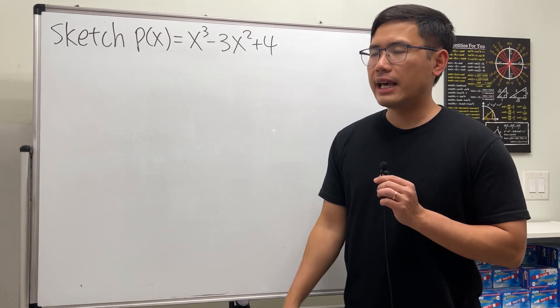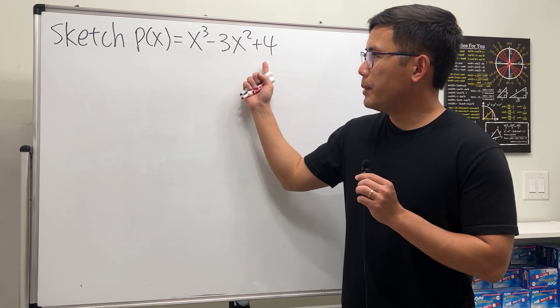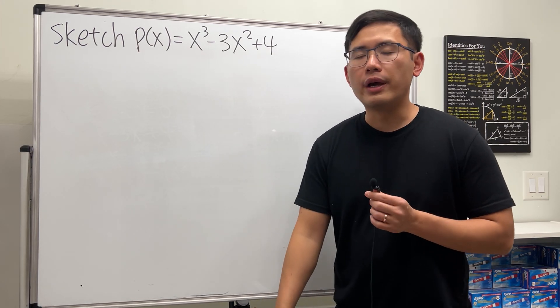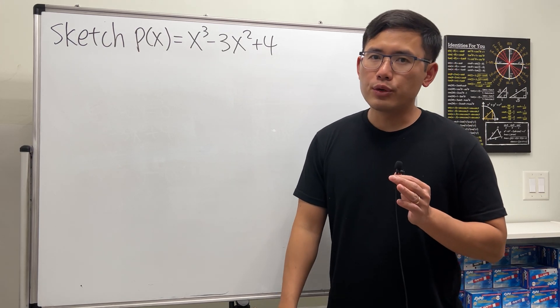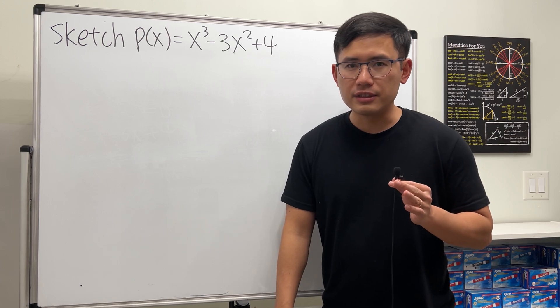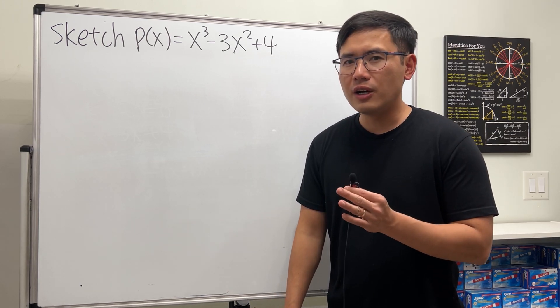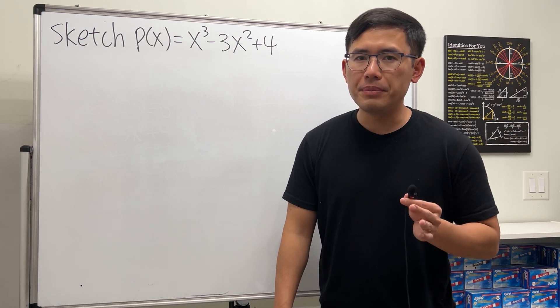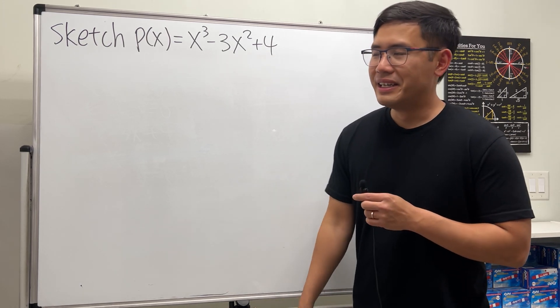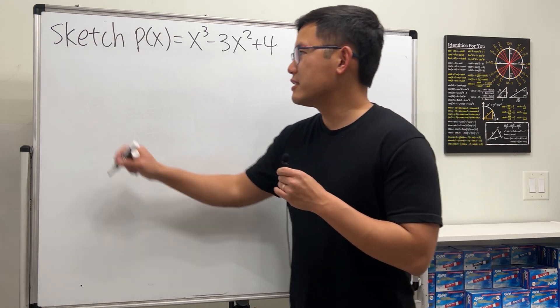Let's see how we can sketch this cubic polynomial the pre-calculus way. We are going to find the y-intercept, the x-intercept, the sign chart, and also the end behavior, and then we will go from there.